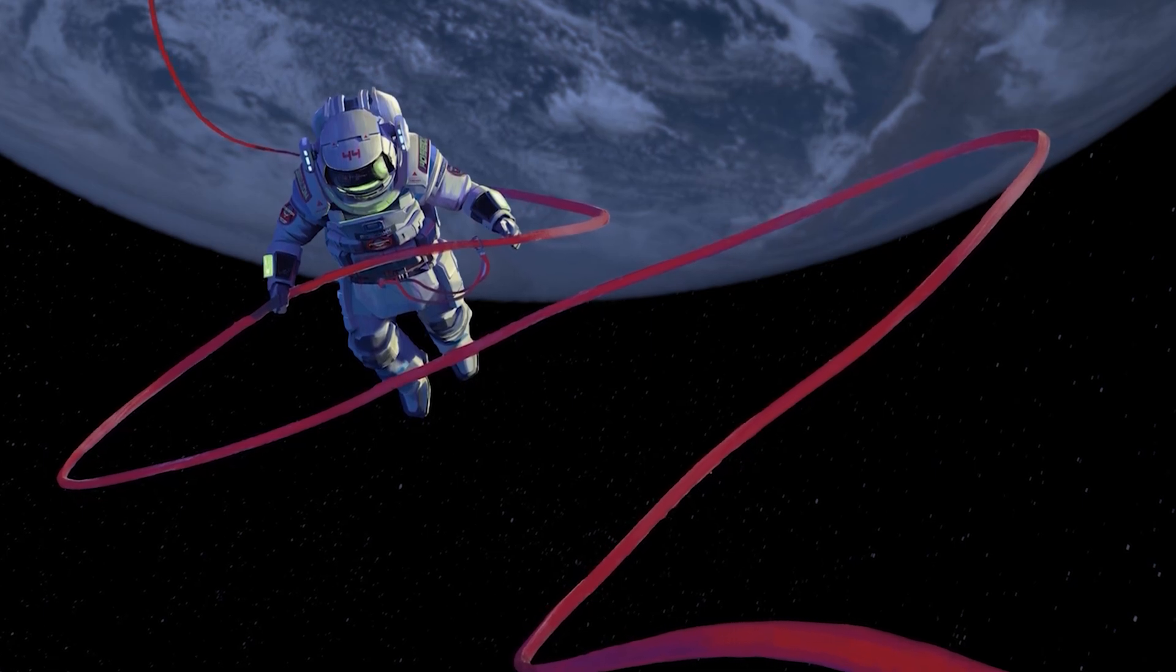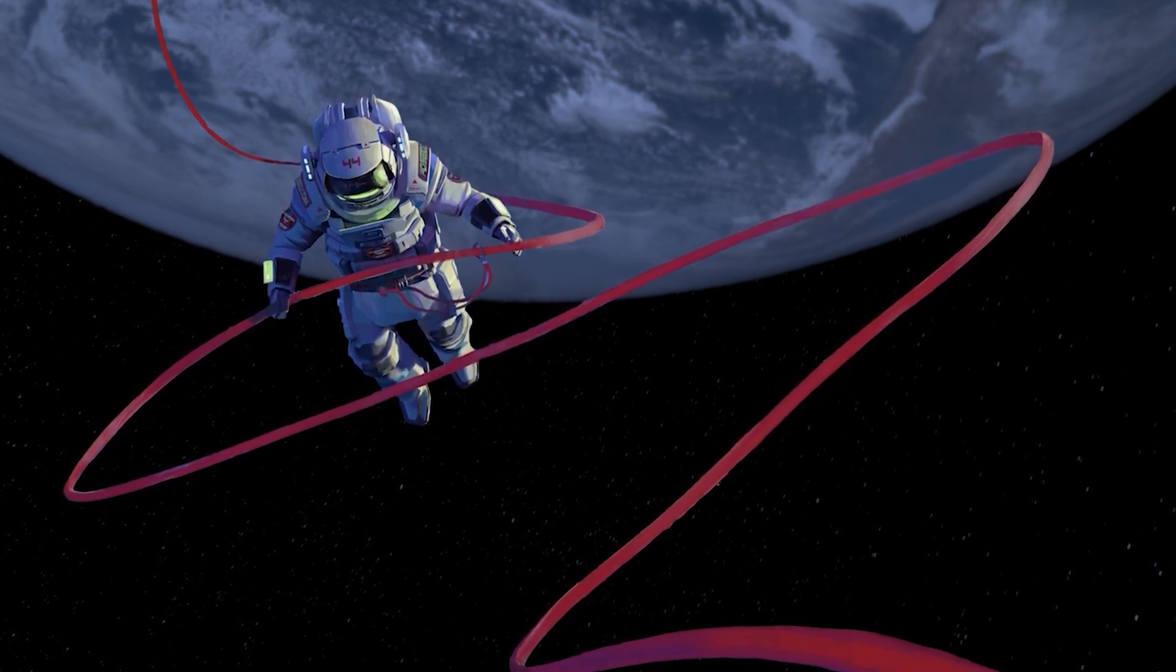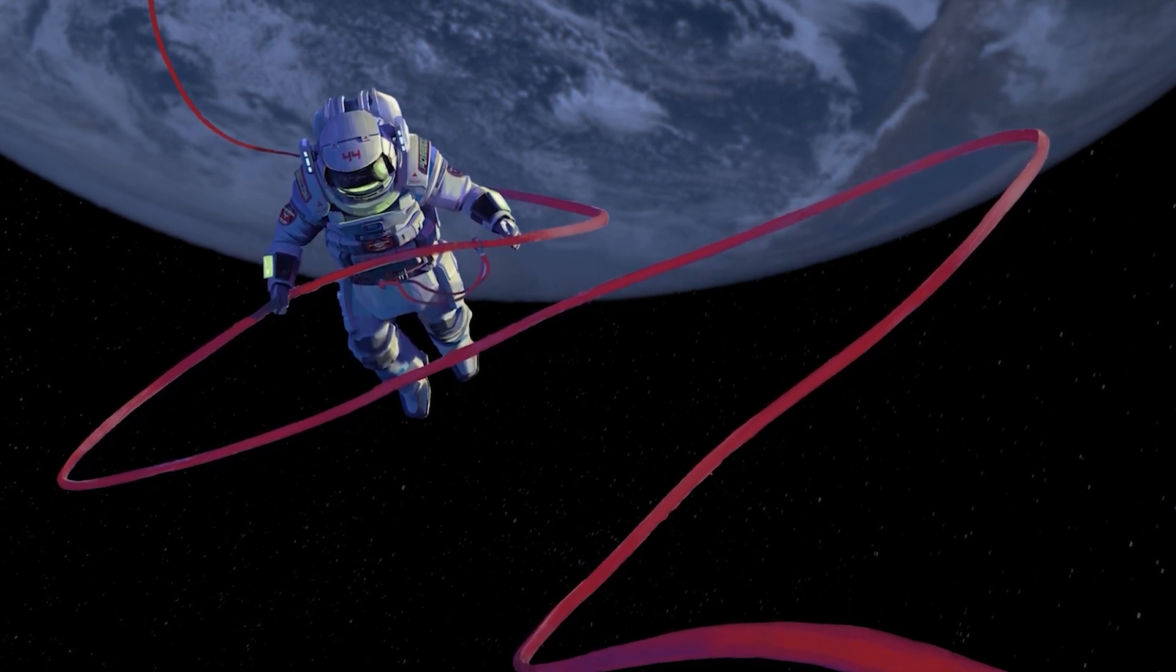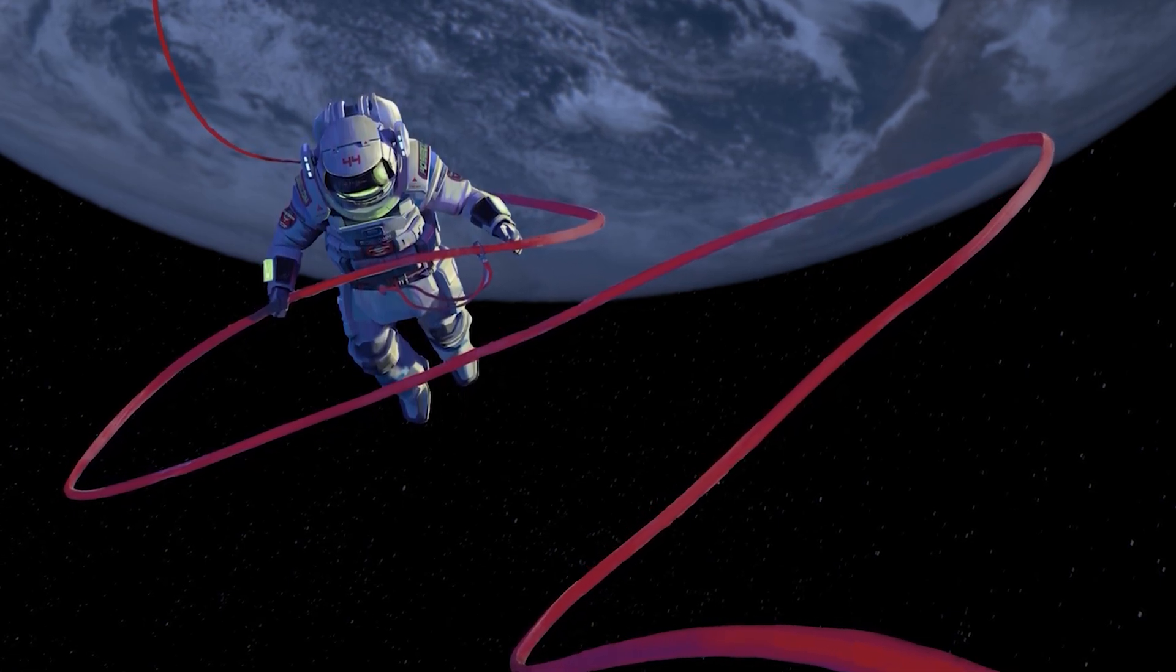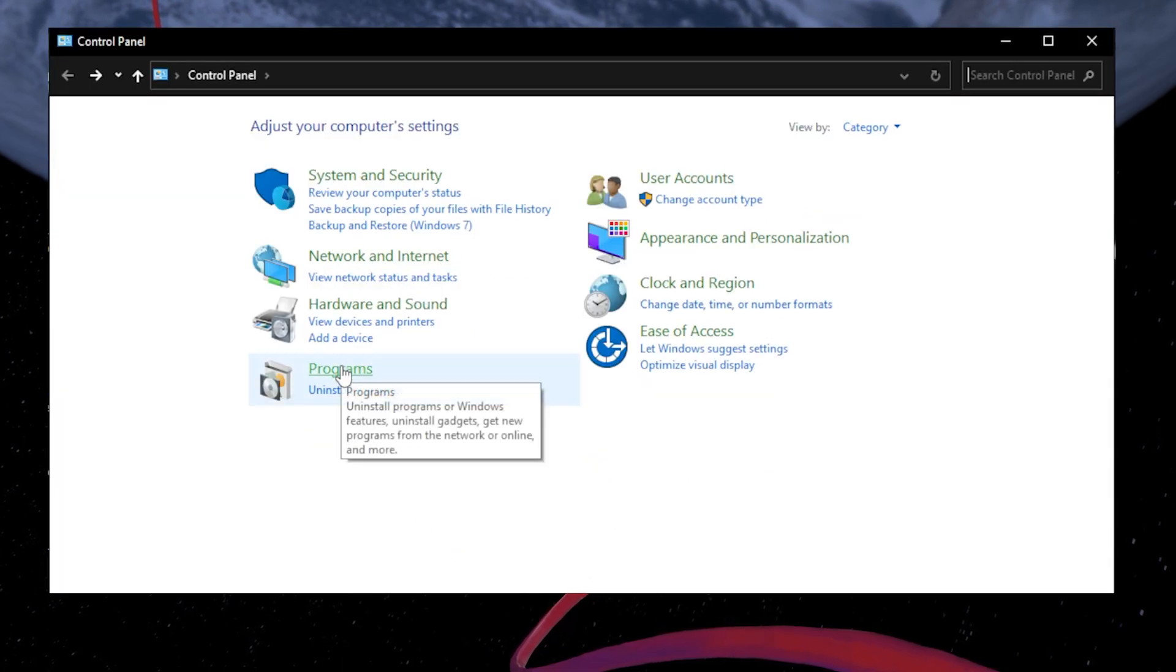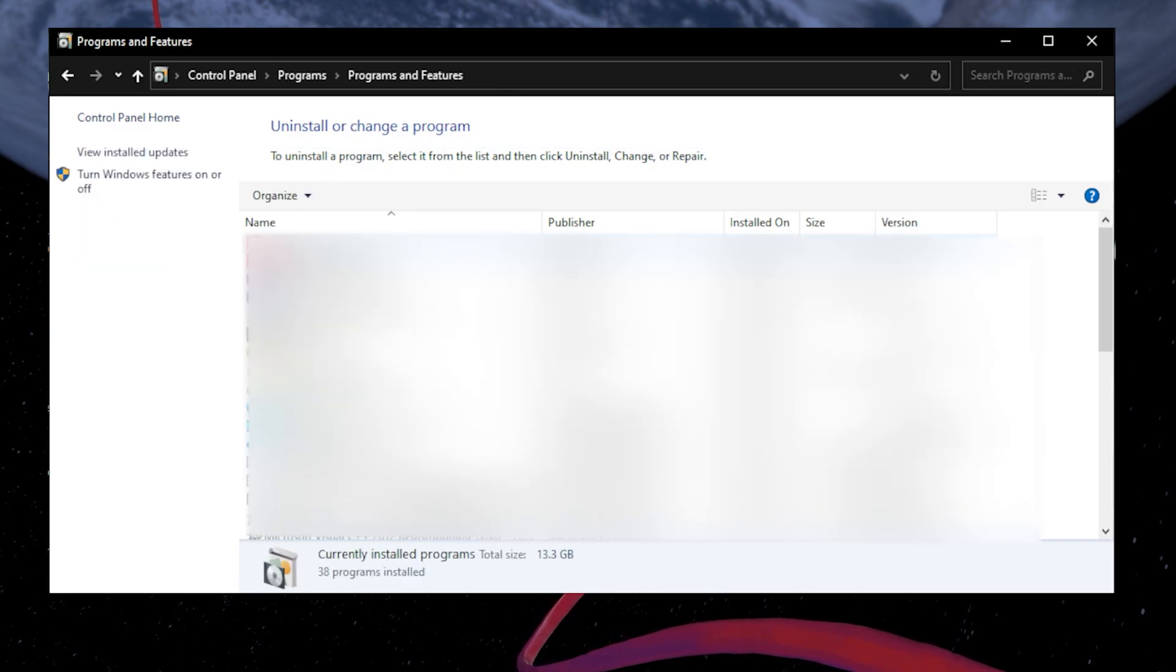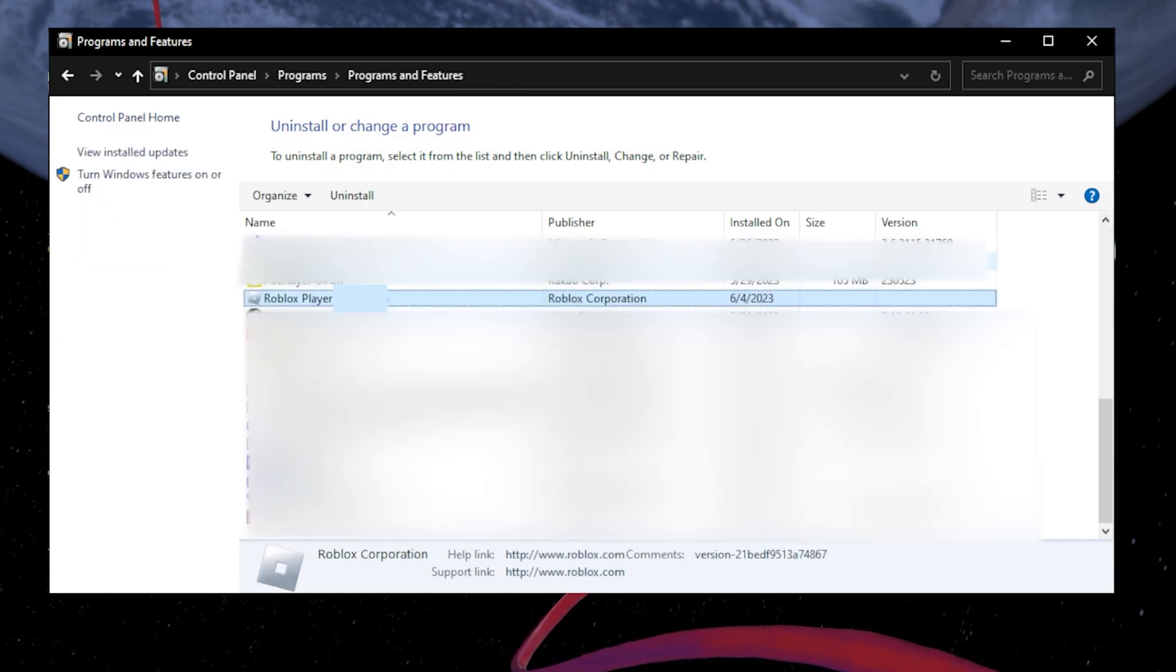If none of the previous methods have resolved the error code zero, reinstalling Roblox might be the ultimate fix. Start by completely uninstalling Roblox from your system. Go to the Control Panel, navigate to Programs or Programs and Features. Find Roblox in the list and click on Uninstall.